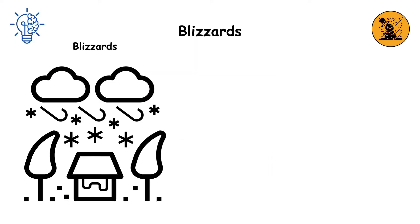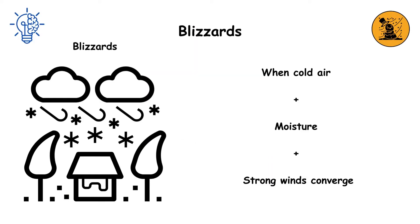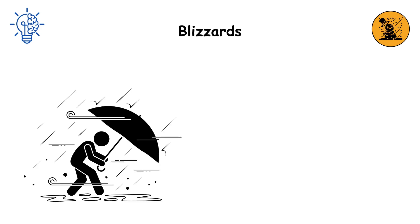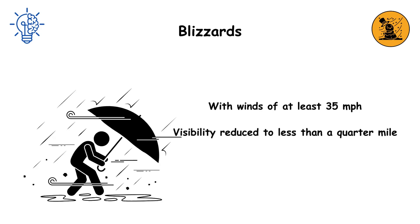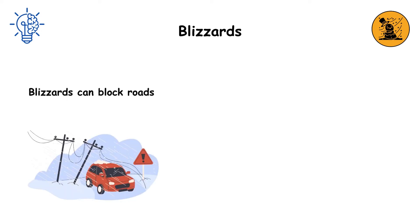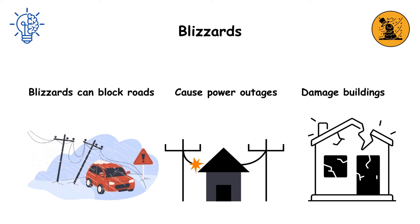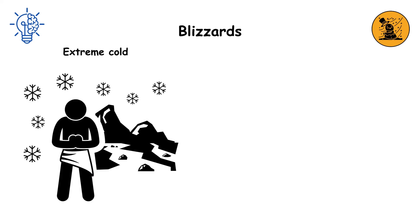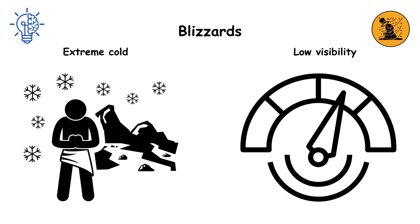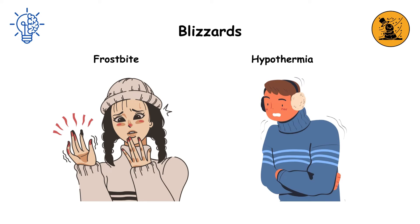Blizzards form when cold air, moisture, and strong winds converge. With winds of at least 35 miles per hour and visibility reduced to less than a quarter mile, these storms can paralyze entire regions. Blizzards can block roads, cause power outages, and damage buildings. The extreme cold and low visibility can lead to frostbite and hypothermia.